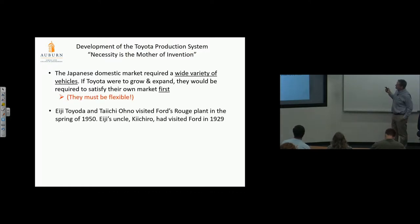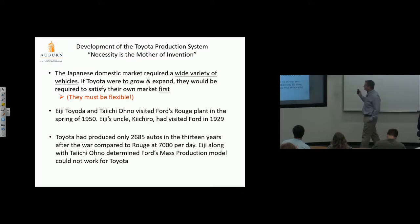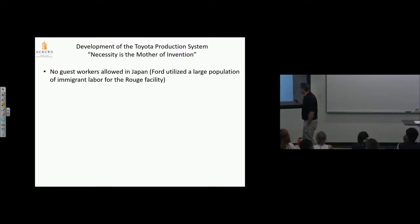Eiji Toyota and Taiichi Ono visited Ford's Rouge plant in spring 1950. Eiji's uncle Kiichiro had visited in 1929. Toyota had produced 2,685 vehicles in 13 years; Rouge plant produced 7,000. Eiji and Ono determined Ford's mass production model could not work for Toyota. They couldn't accomplish what Ford did—not that they didn't want to, they just weren't capable.